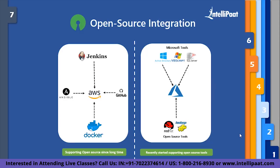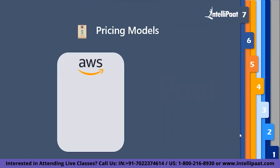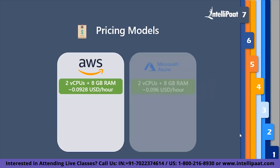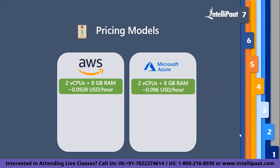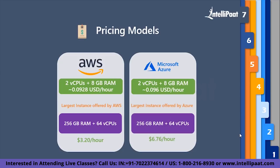After discussing their services, now let's check their pricing models. In case of AWS, a very basic instance which includes two virtual CPUs and 8GB of RAM will cost you around $0.0928 USD per hour. Similarly, in case of Azure, it costs you approximately $0.096 USD per hour. Also, the largest instance offered by AWS is 256GB of RAM along with 64 virtual CPUs, which costs around $3.20 USD per hour. In case of Azure, it offers the same capacity but at a higher cost of $6.76 USD per hour.